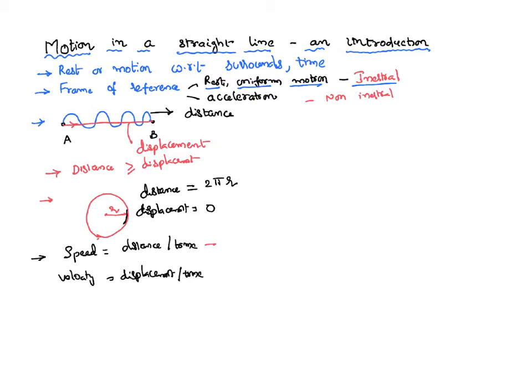Because distance and time are scalars, speed is also a scalar. Because displacement is a vector and time is a scalar, vector divided by scalar is still a vector — so velocity is a vector. A vector is a physical quantity having both magnitude and direction and satisfying the rules of vectors. Speed is a physical quantity having only magnitude.